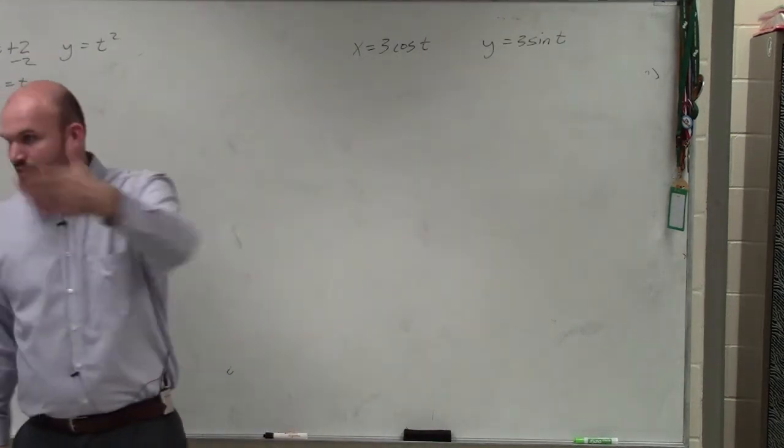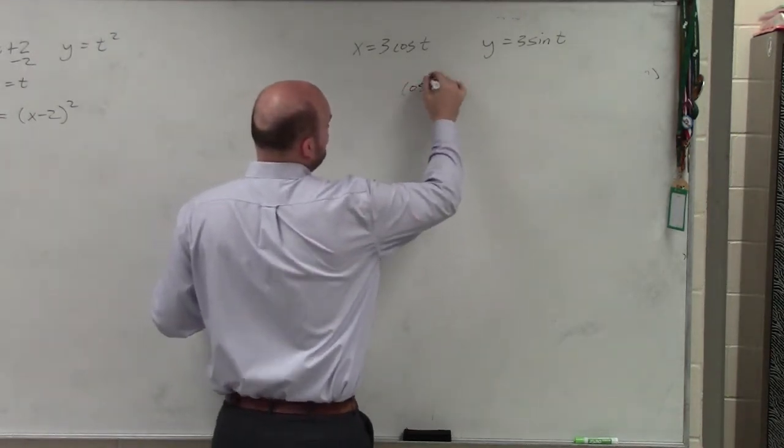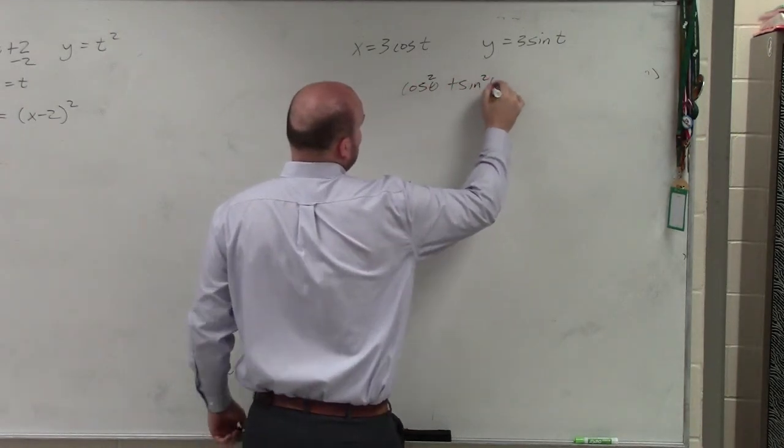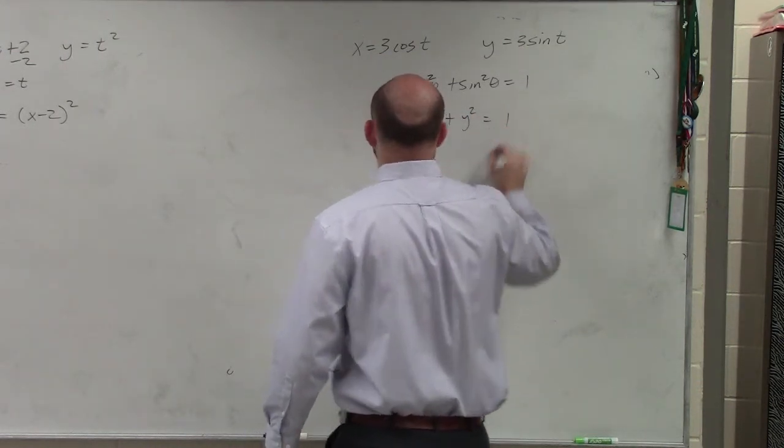So again, the same theory goes on. We have our cosine of theta squared plus sine squared of theta is equal to one. x squared plus y squared is equal to one.